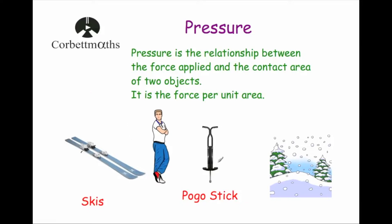If this man was to go out and walk in the snow, it would be much more suitable for him to wear skis than to go on a pogo stick. Whenever he stands on the skis, his weight — the downward force — is spread out over a larger area. In other words, there is less pressure on the snow so he doesn't sink down as far.